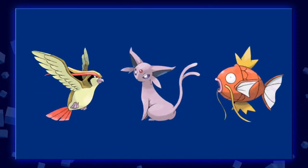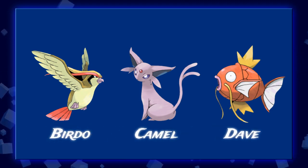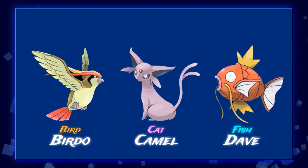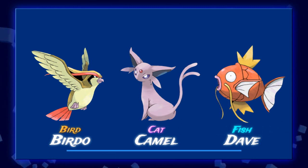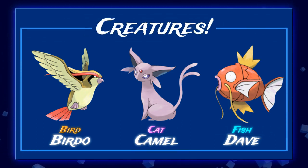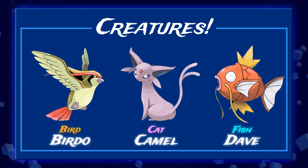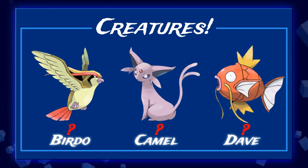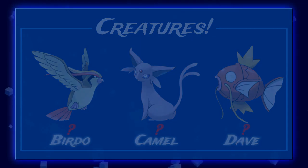Welcome to the inheritance tutorial. Let me introduce you to three friends: Birdo, Camel, and Dave — a bird, a cat, and a fish. All of them are what we'll call creatures. Our goal today is to make them do stuff with general commands, so without even knowing which one I'm talking to, I can ask them to move, talk, or jump.